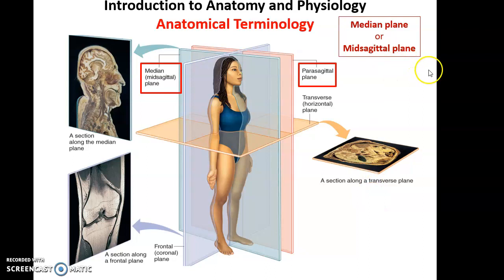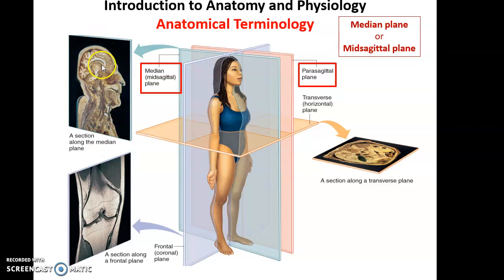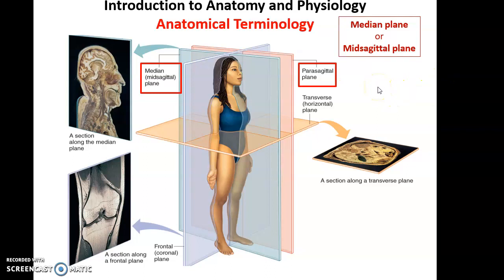Then we have the median, or mid-sagittal, plane. The mid-sagittal plane cuts through the midline of the body giving us a right piece and a left piece. When we open that up and look at where the plane cut through, we can see the mid-sagittal or median section — here is the view of the head and neck cut by a mid-sagittal plane. There is also the parasagittal plane, which cuts through the body to give a right and left piece, but those pieces are not equal — it cuts away from the midline rather than through it.